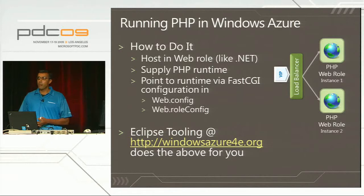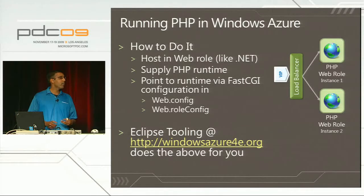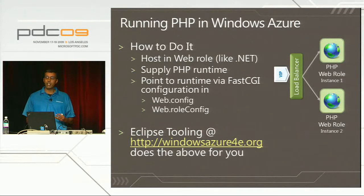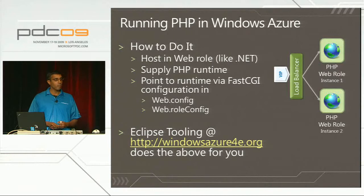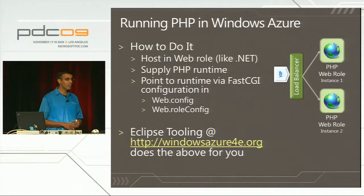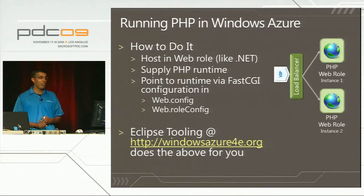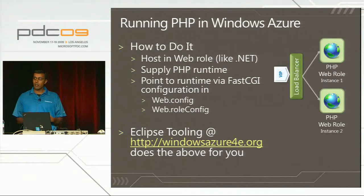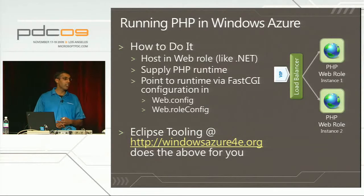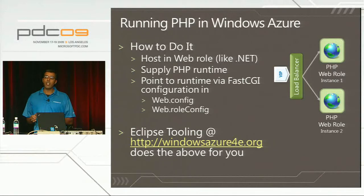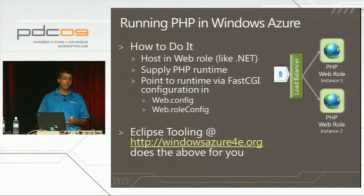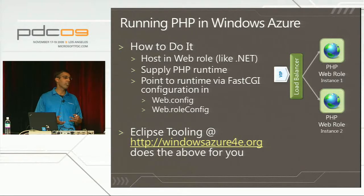How do you run PHP in Windows Azure? It turns out it's very similar to how you would run .NET code. In both cases, the code runs inside a Windows Azure web role. However, with PHP, you must also supply the PHP runtime, which you can download from php.net. You need to point to that runtime via the fast CGI configuration in two places: the web.config and the web.roleconfig. This is very similar to what you would do in IIS - the main difference being that web.roleconfig replaces applicationhost.config.